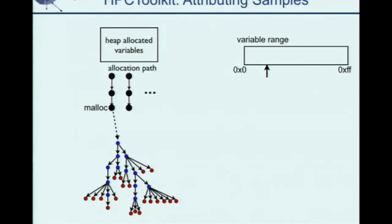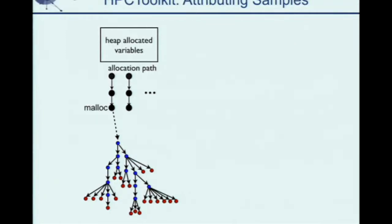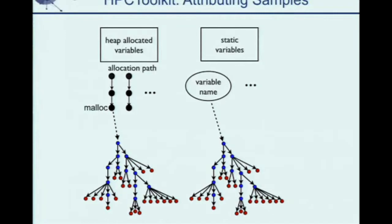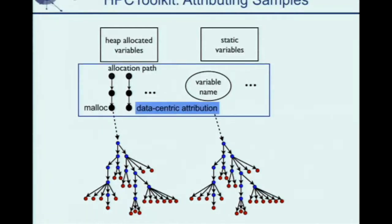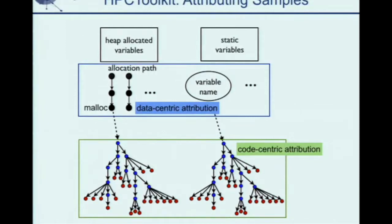Multiple samples can touch the same variable, so we aggregate all of them and associate them with the allocation point. There can also be multiple allocation points for multiple heap variables. Besides heap-allocated variables, we also handle static variables allocated in global scope. Because static variables are in the symbol table, we can grab their name and memory range directly. Instead of using an allocation call path, we use the variable's name. We call the attribution to data allocation points data-centric attribution, and attribution with full calling context code-centric attribution.